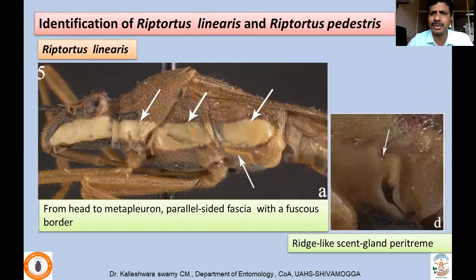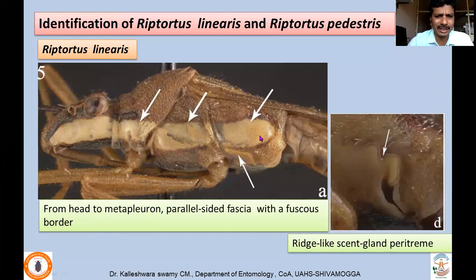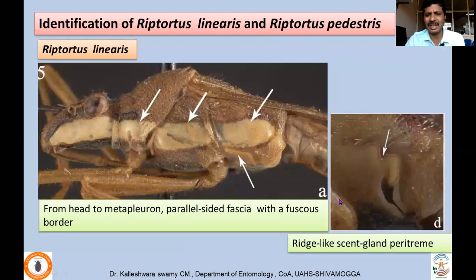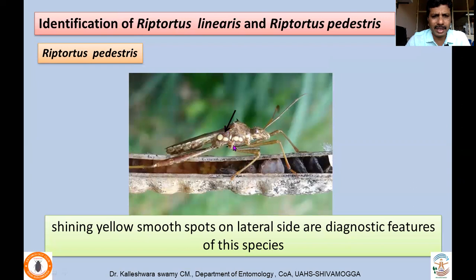Coming to the two alydid species — Riptortus linearis and Riptortus pedestris — Riptortus linearis has a parallel-sided fascia from the pro- to metapleura up to the last thoracic segment, with a fuscous border. That linear line probably gives it the name Riptortus linearis. Most of these bugs release a nauseous smell when handled, especially targeted against predators. Riptortus pedestris can be identified by shining yellow spots on the lateral side, which is the diagnostic feature distinguishing it from Riptortus linearis.